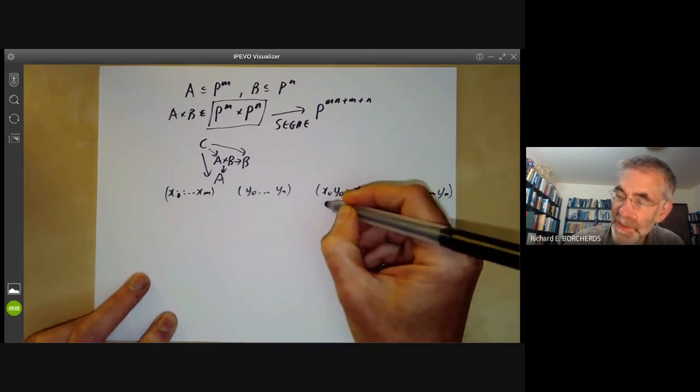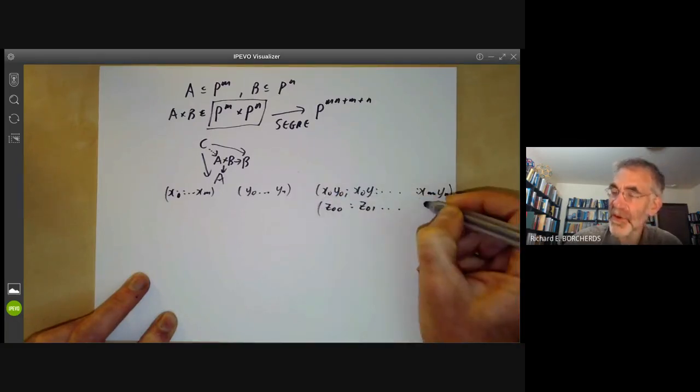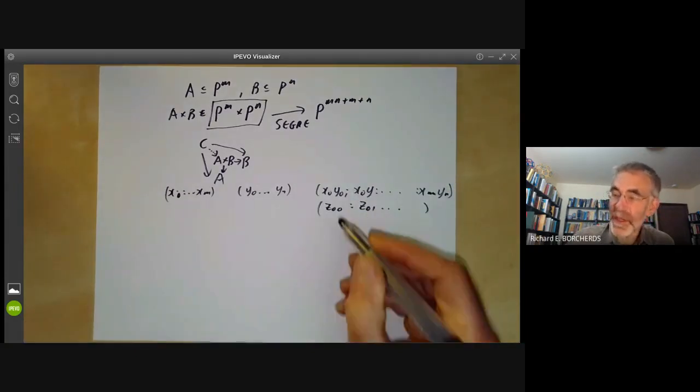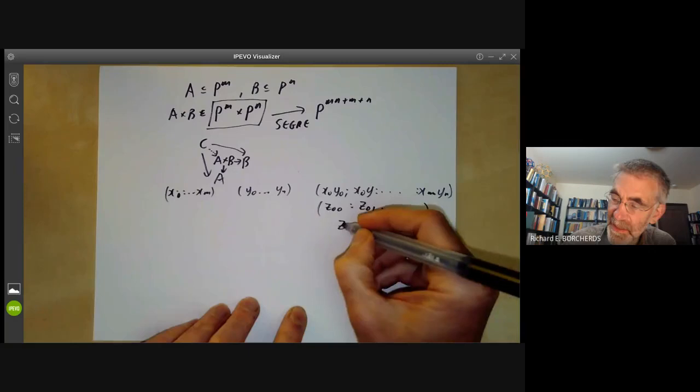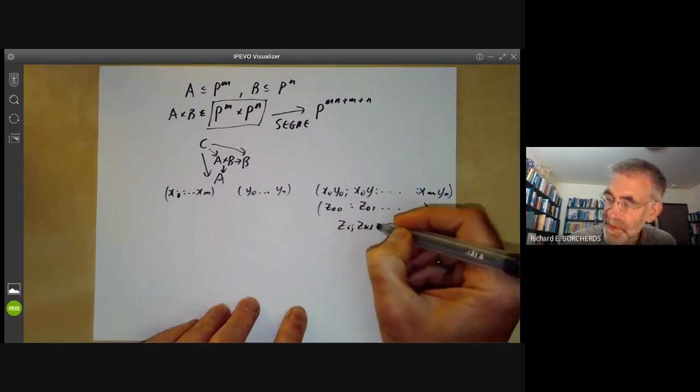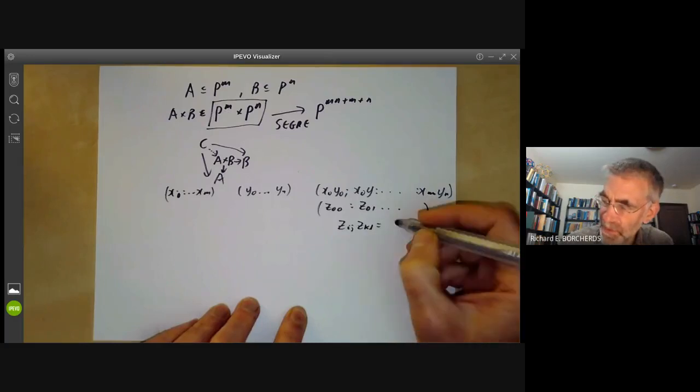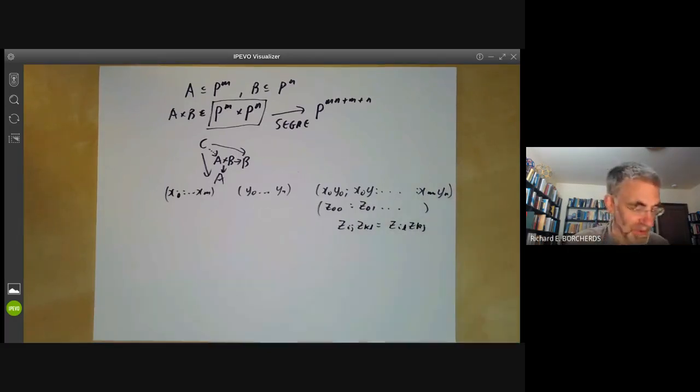So we will call these Z0,0, Z0,1 and so on. And we also remember that there are a whole lot of quadratic equations satisfied by these ZIs, which say ZIJ ZKL is equal to something I always get the wrong way around. I think it's ZIL ZKJ, but there's a pretty good chance I've got that wrong, so don't rely on it.